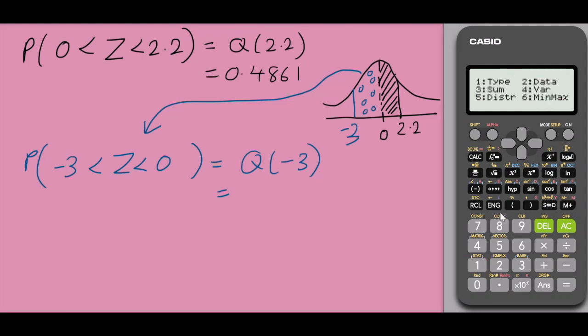So this is simply Q of minus 3. So I select shift 1, 5 for distribution, and 2 for Q, minus 3 equals to. The probability is 0.49861.